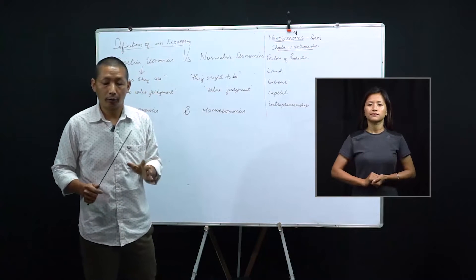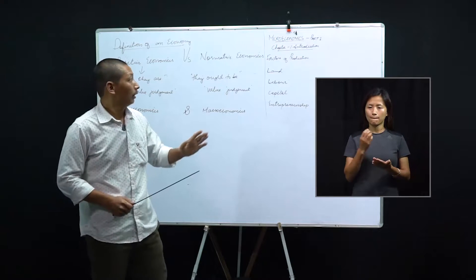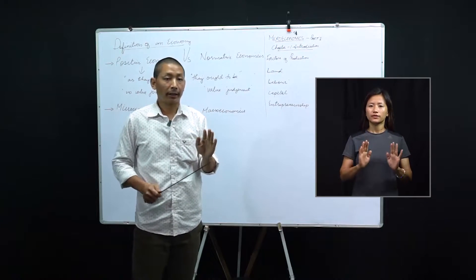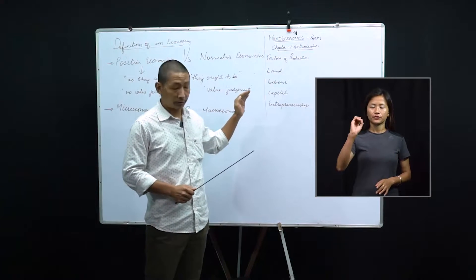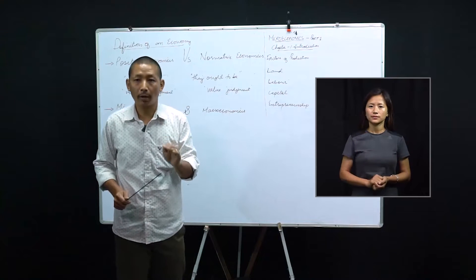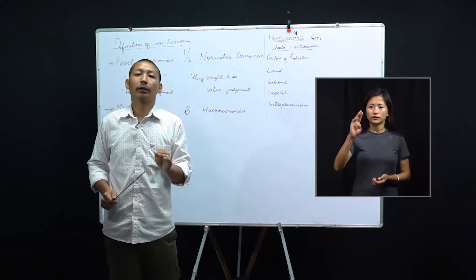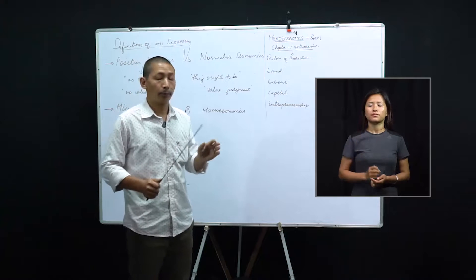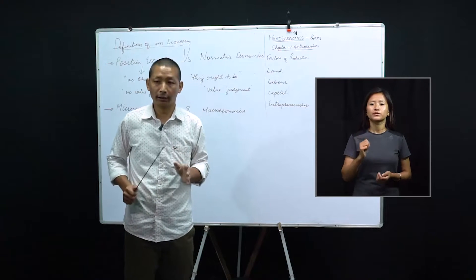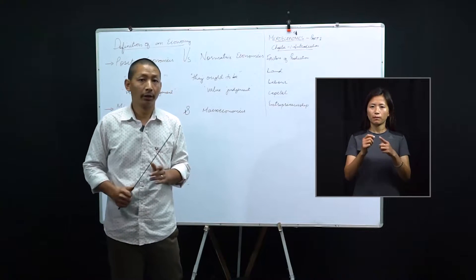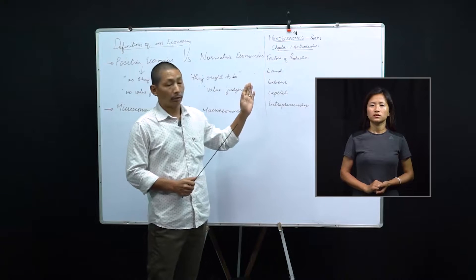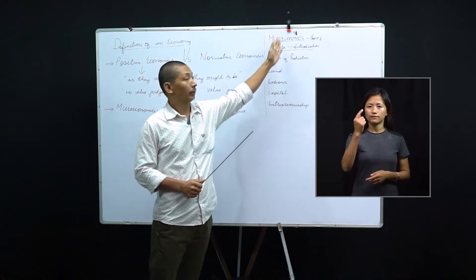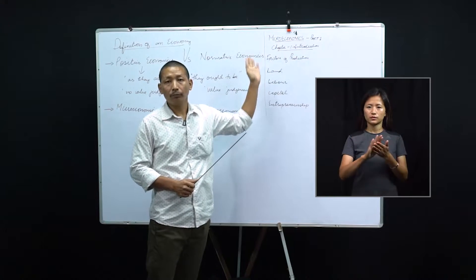For marks distribution also, the first part will have 50 marks. Then the second part, that is statistics, will have only 40 marks. Another 10 marks will be done in the form of project work — that will be internal. So we are now starting with the first chapter under microeconomics.